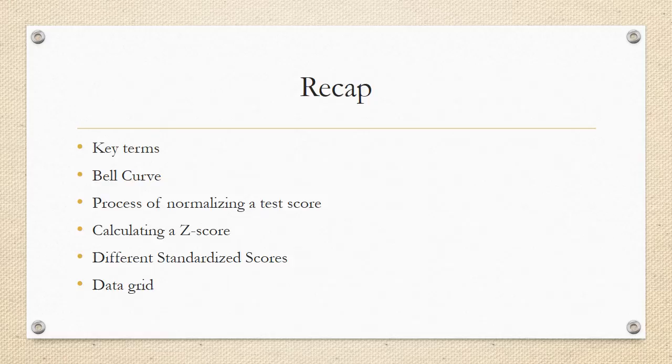Let's recap. So, we've gone over some key terms, standard deviation, mean, standard score, and all of those research methodology things that you thought you would never use. You've been reminded of the bell curve and how important it is for us in neuropsychology. You've been told the process of normalizing a test score and has been shown how to calculate a z-score. We've gone over several different standardized scores and how they relate to each other. And then, finally, you were introduced to our data grid and a brief picture of what we like that to look like.